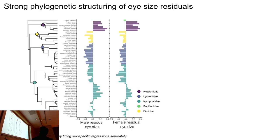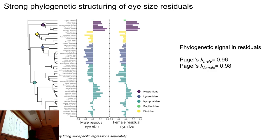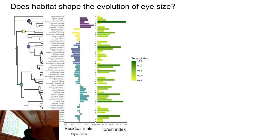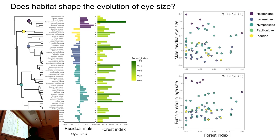Surprisingly, after all that effort, we see very strong phylogenetic structuring of the residuals. One of the metrics — if it's zero, the trait has no phylogenetic signal; if it's one, the trait is essentially evolving by Brownian motion. Our value is 0.96, so it's like nothing is happening in terms of habitat-driven change. Some groups have big eyes and others have smaller eyes, but there's a really strong phylogenetic structure in the data. We used a simple forest index proxy, and now I'm using lidar and land cover data to get more robust habitat classification estimates, but you see nothing happening — which given the residual phylogenetic structuring is not surprising.